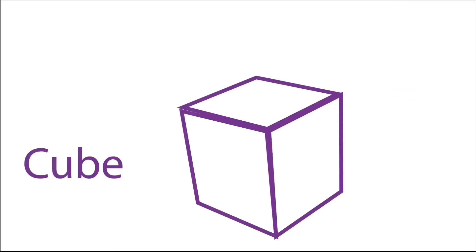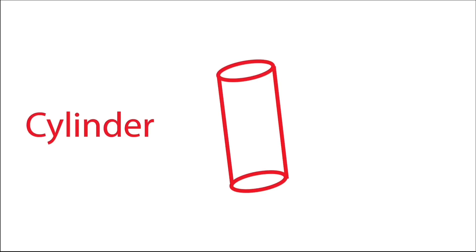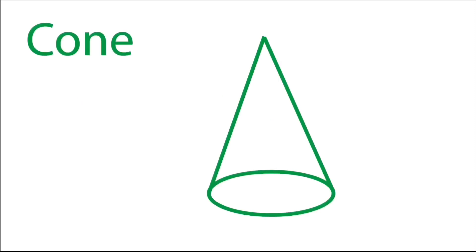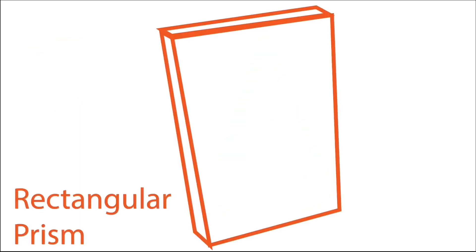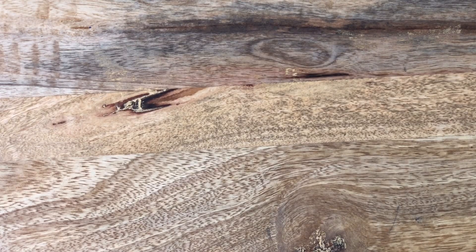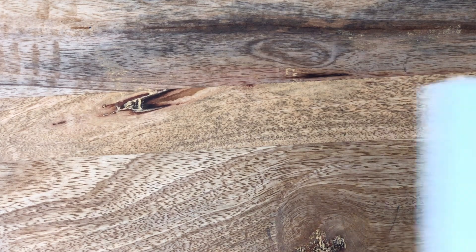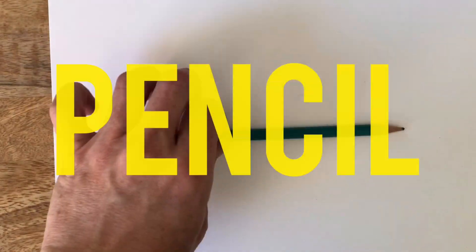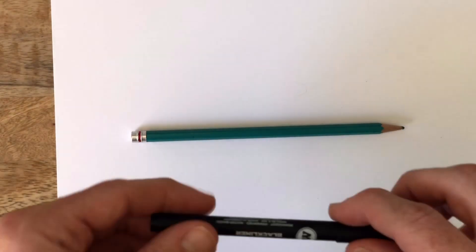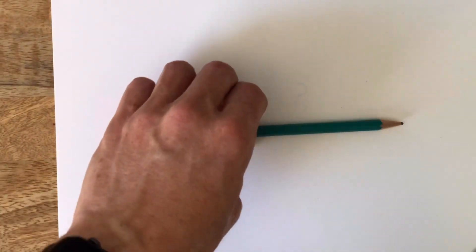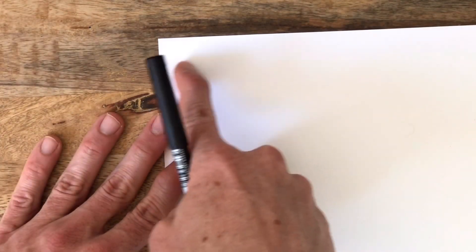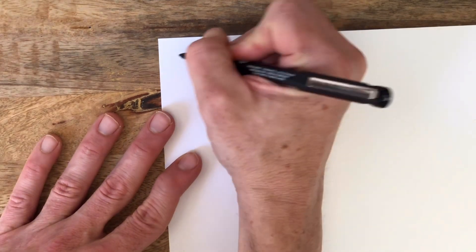Let's go over our shapes one more time: we have a cube, a cylinder, a sphere, a cone, and a rectangular prism. We're going to learn how to draw all of these today and use them in a drawing. For today's lesson, all you're going to need is a piece of paper and a pencil. I'm going to use a marker today so you can see it better, but if you use a marker and make a mistake, you can't erase it. So in the first corner up here, I'm going to write the word 'cube.'